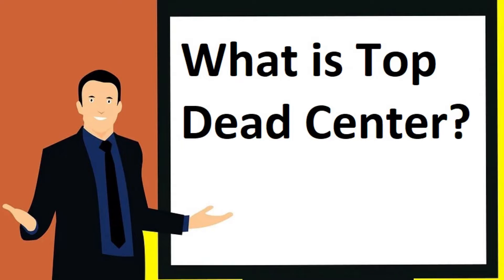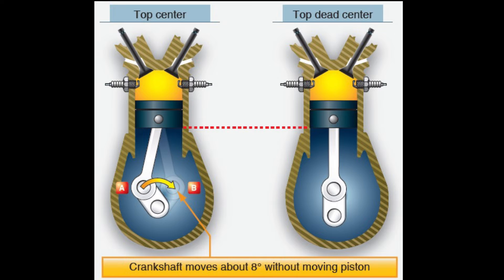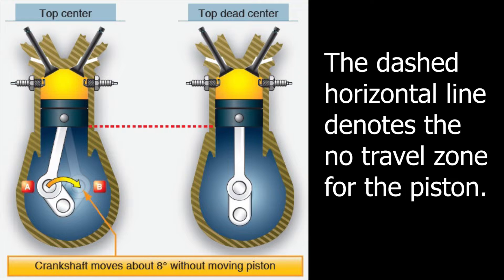With all that's been said, what is Top Dead Center? Top Dead Center is not to be confused with the piston position called Top Center. A piston at Top Center has little value from a timing standpoint because the corresponding crankshaft position may vary from 1 degree to 8 degrees for the piston position. Notice that the piston does not move while the crankshaft describes a small arc from position A to position B. This no-travel zone occurs between the time the crankshaft and connecting rod stop pushing the piston upward and continues until the crankshaft has swung the lower end of the connecting rod into a position where it can start pulling the piston downward.